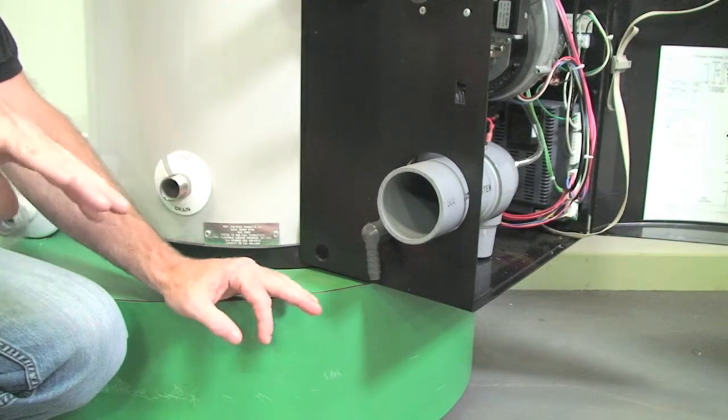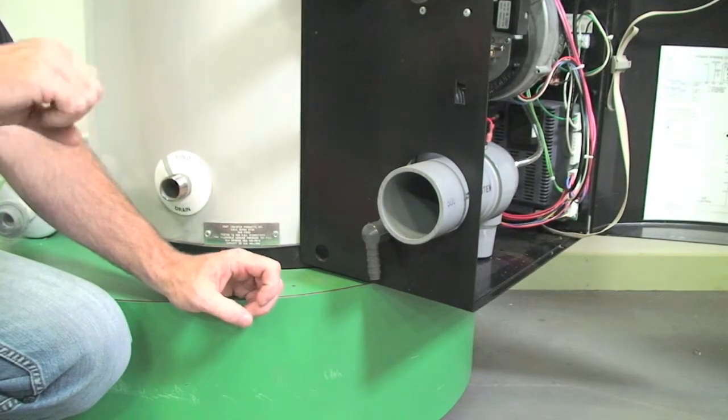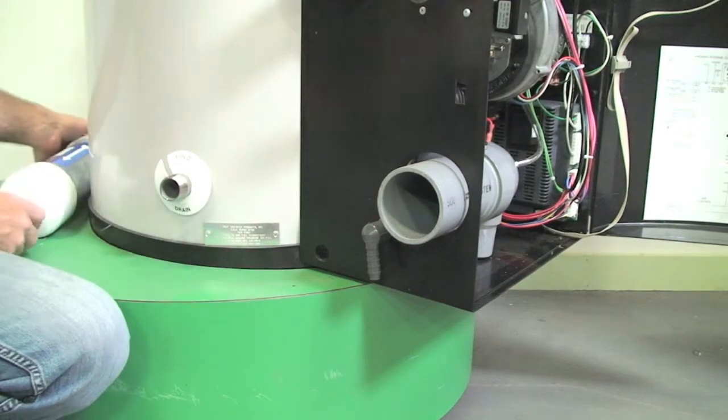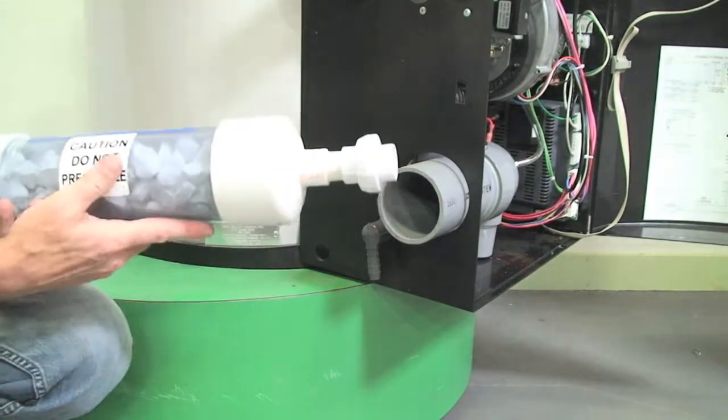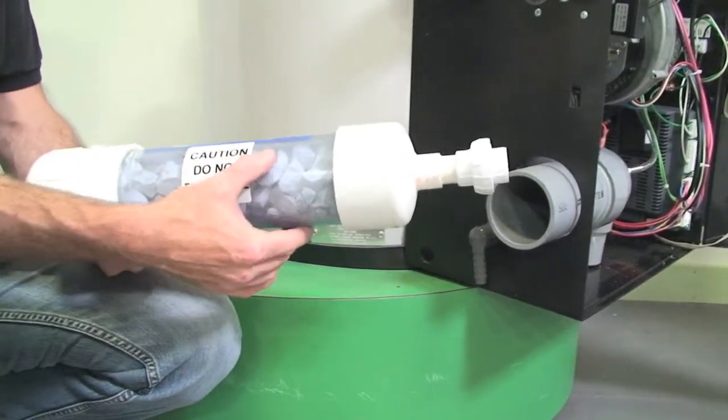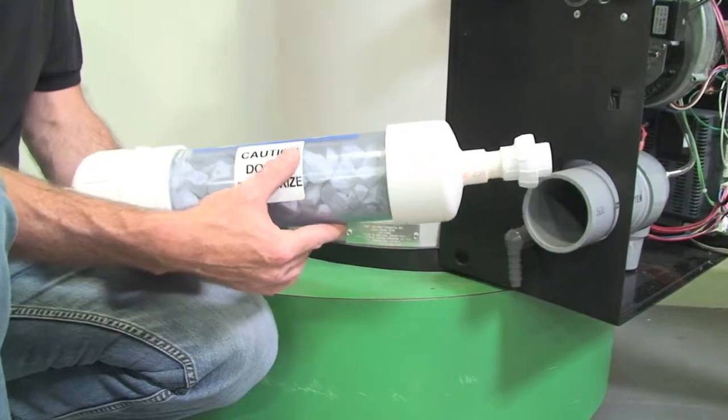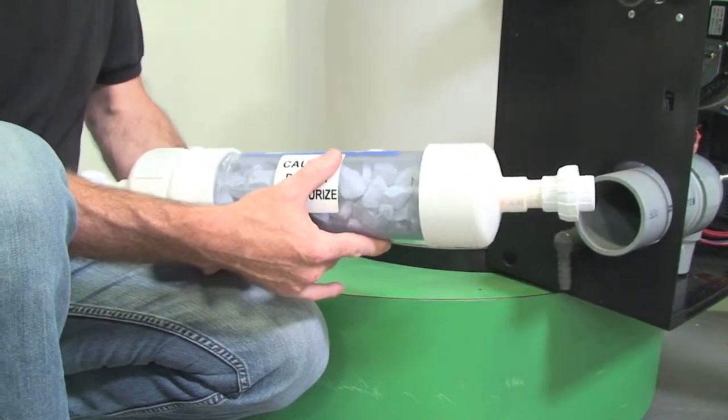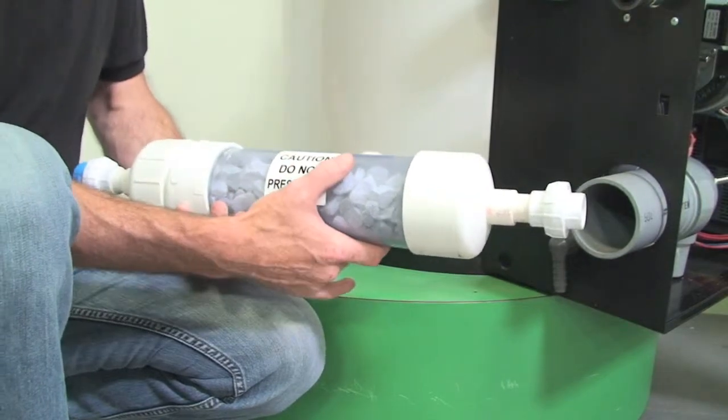Again, as we mentioned, condensate from the combustion process is acidic. In order to neutralize it to dump it into some drains, it may be required to add a condensate neutralizer, which I have here. These are simply marble chips that, as the condensate goes through here, will erode. It is rechargeable. During our annual maintenance, we will take a look at this, make sure it's still filled with marble chips, and replace if necessary.